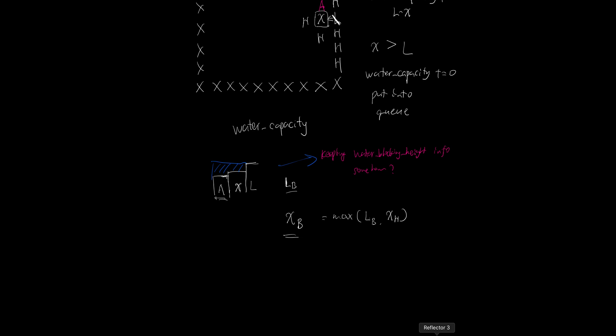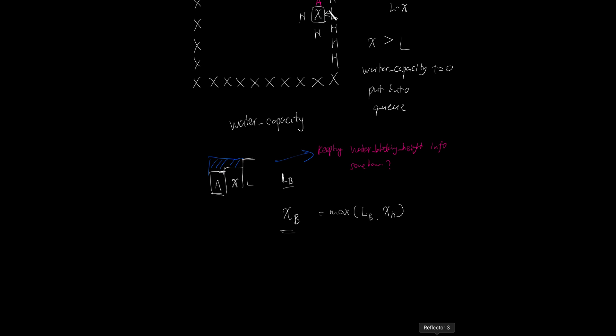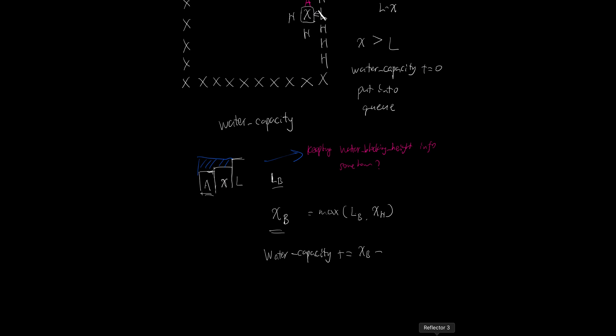That solves the saving problem. Whenever I process an element, I put it back into the minimum heap, but instead of saving its own height, I save the new blocking height. The water capacity at any location is: blocking_height minus its own height. If blocking height equals own height, it means the cell is higher than its neighbor's blocking height, so it holds exactly zero water. If blocking height is higher than itself, it can hold water equal to blocking_height minus own_height.